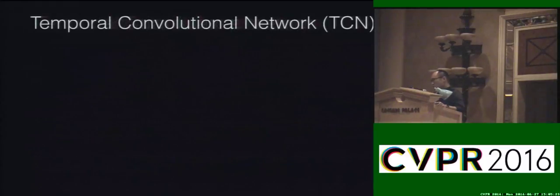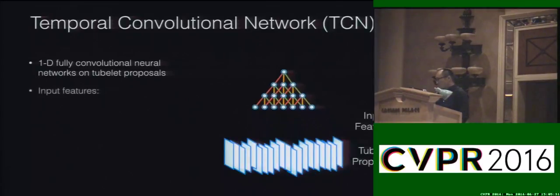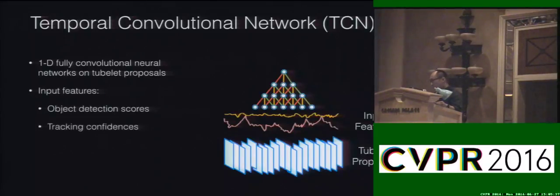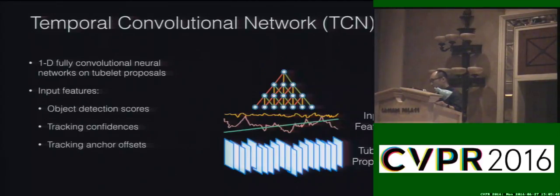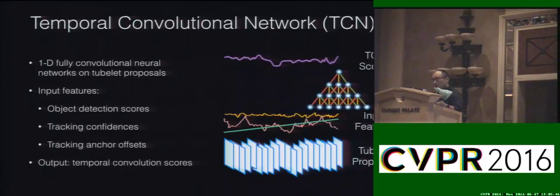The temporal convolution network is a fully convolutional network performed on the tubelet proposals. The input features are the object detection scores, the tracking results, and the distance to the starting point of the tracking. The TCN convolves these input features and generates the probabilities of each class for each frame.